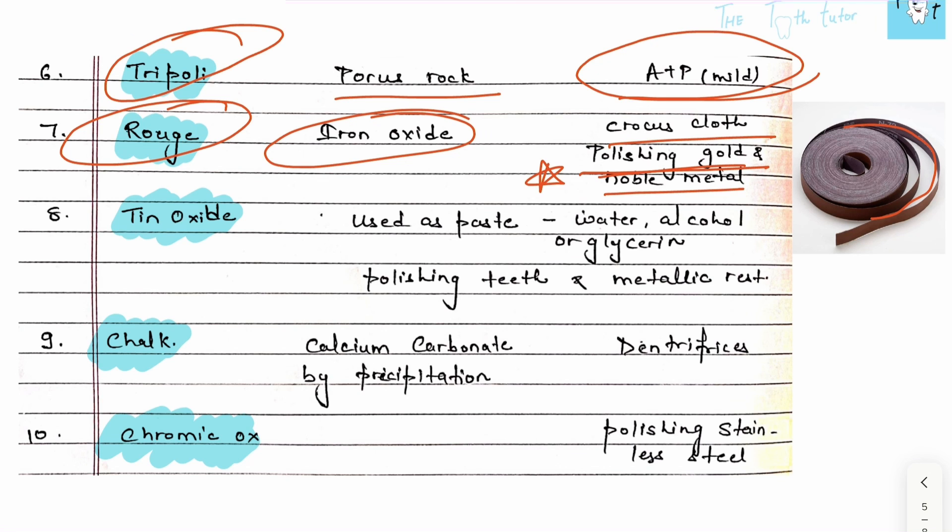Then we have tin oxide. It can be used as a paste with water, alcohol, or glycerine, used for polishing teeth and any metallic restoration.